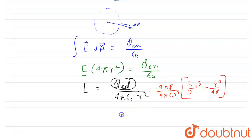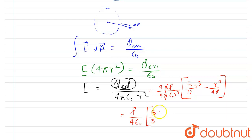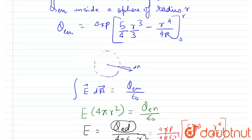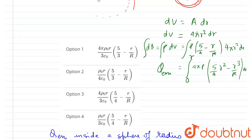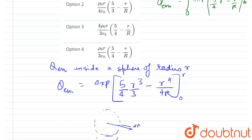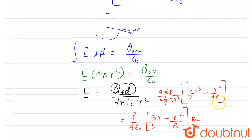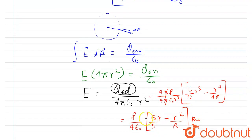Dividing through by r² and simplifying: ρ₀ multiplied by [5r/12 × (4/1) − r²/(R)] — cancelling factors — gives E = ρ₀/(4ε₀) × (5r/3 − r²/R). Taking r common inside the bracket yields the final simplified form.